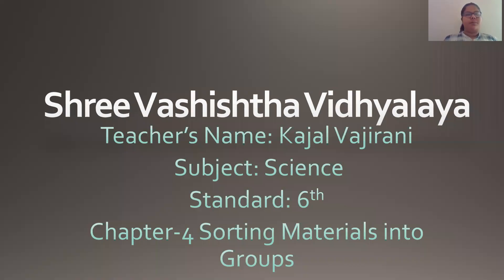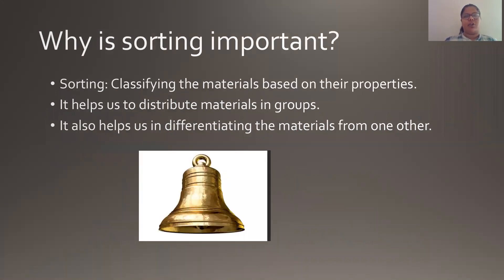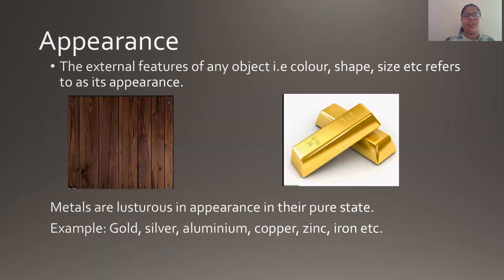Good morning students. Welcome back to another video of our fourth chapter, that is sorting materials into groups. Let us revise what we saw in our last video. We studied about materials and objects — we differentiated between materials and objects. Objects are something which are made up of materials. Then we studied about why sorting of material is important. Further, we studied about properties of material and started differentiating materials based on their properties.